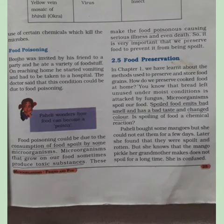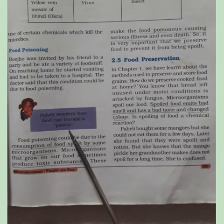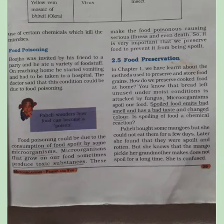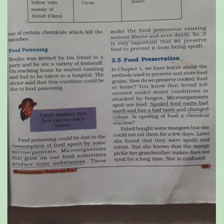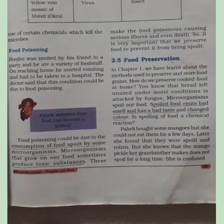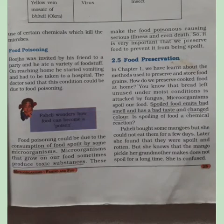The food we eat can sometimes become poisonous. Food poisoning occurs due to consumption of food spoiled by microorganisms. Microorganisms grow in food and produce toxic or poisonous substances that can cause serious illness and may even lead to death. It is very important to preserve food to keep it from spoiling. Spoiled food emits a bad smell and has a bad taste.